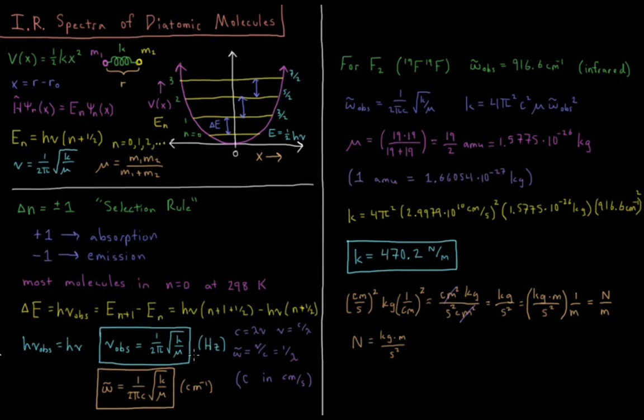But sometimes spectroscopists don't like to use the unit hertz. Sometimes they like to use the unit wave numbers. We can get where wave numbers comes from by looking at the properties of waves and light.